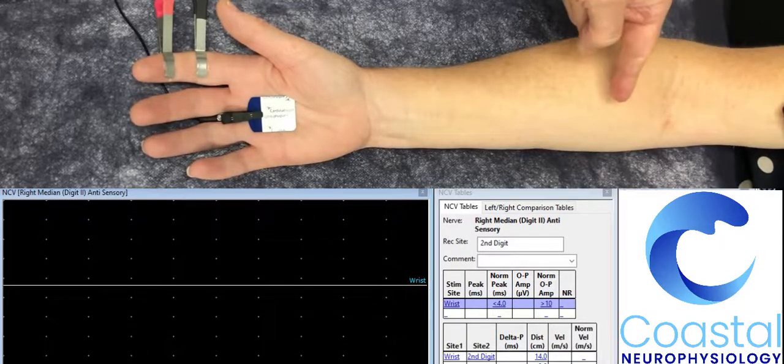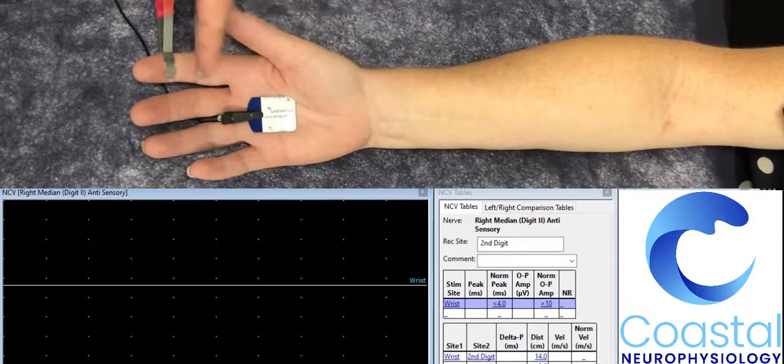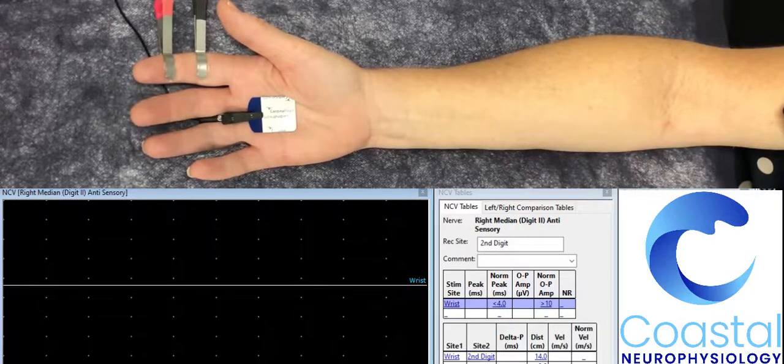The median nerve runs directly down the center of the forearm through the carpal tunnel, and the sensory branches then extend to the thumb, index, middle, and half of the ring finger.